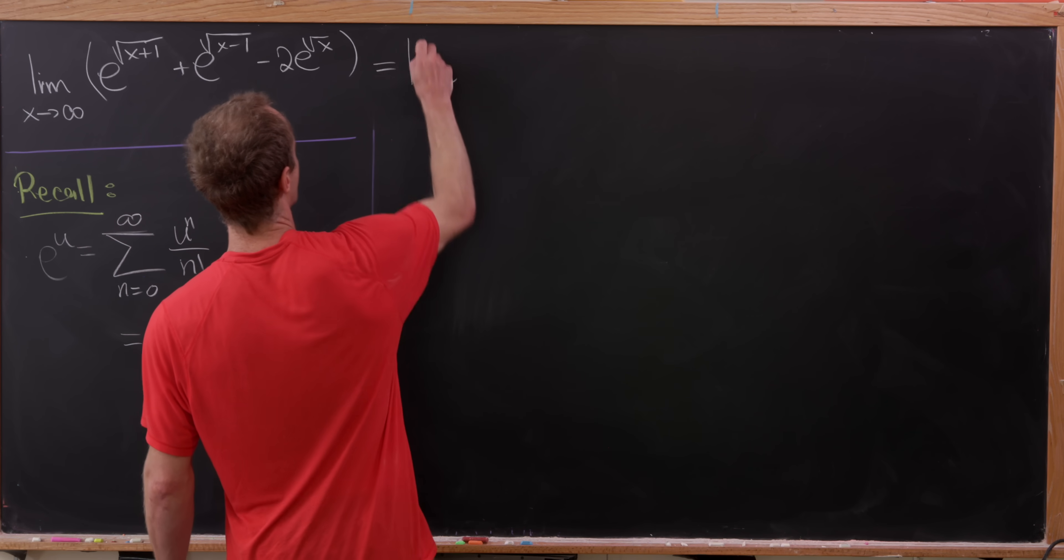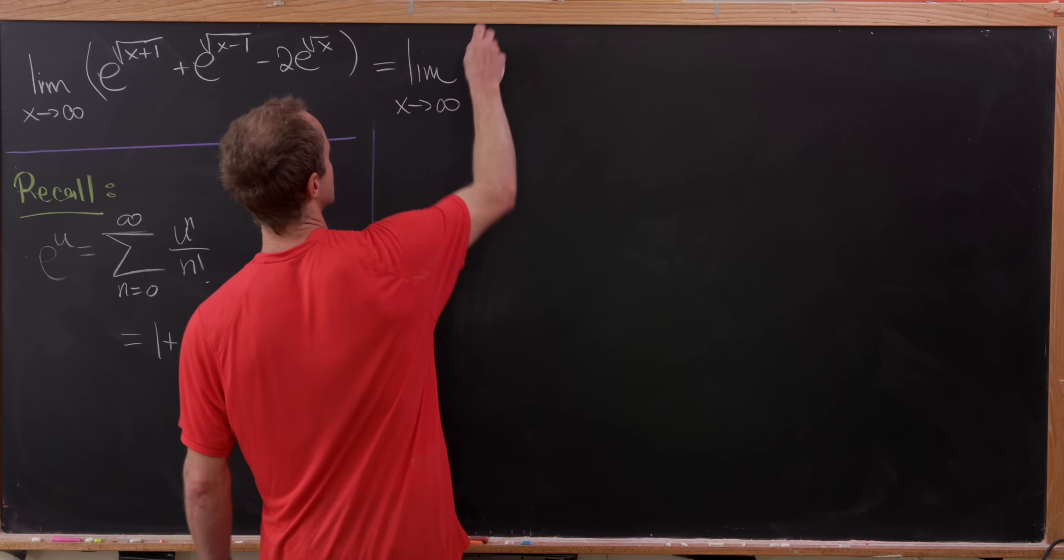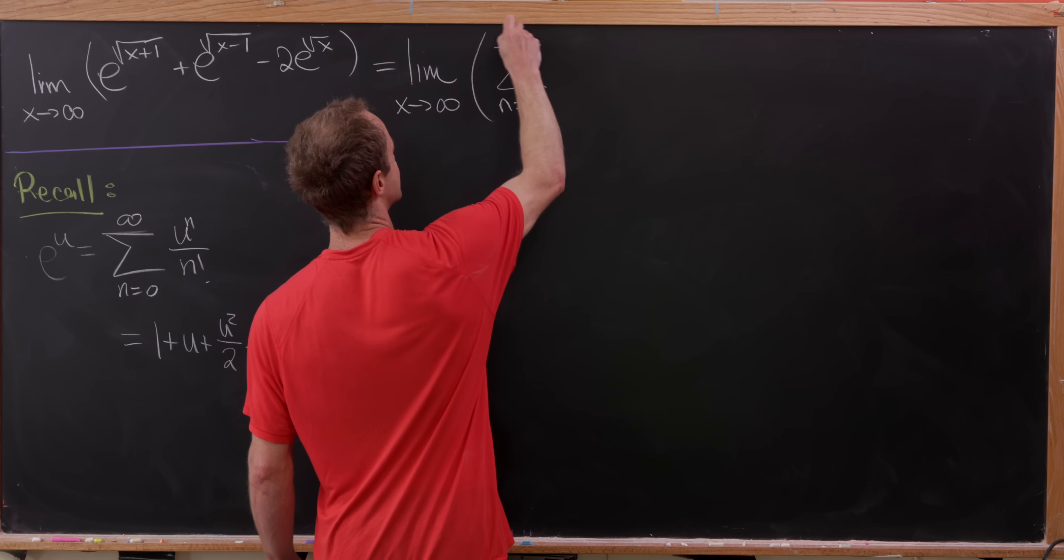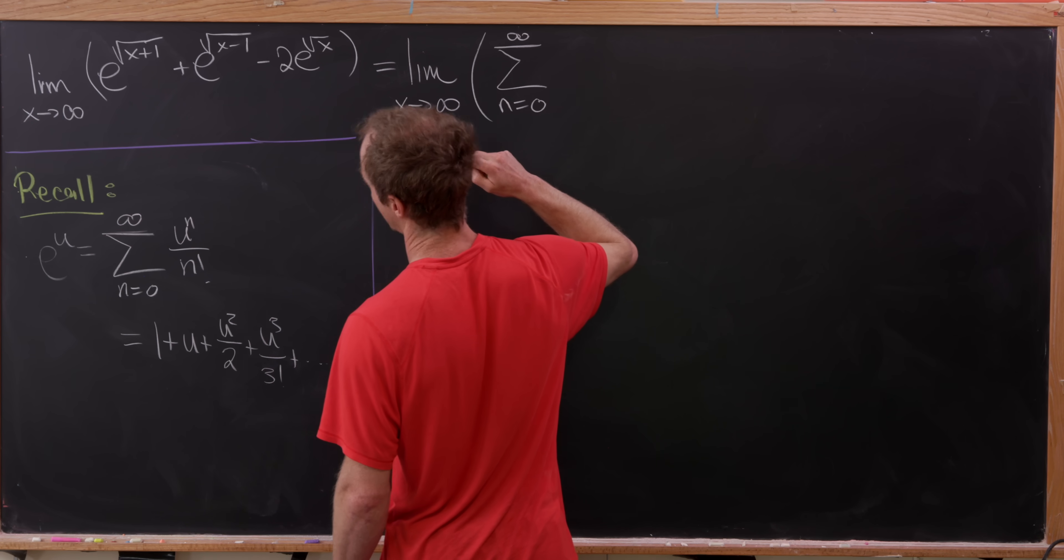Okay, so we're going to start by rewriting all of these using that. So here we have this sum as n goes from 0 to infinity. And then after that, we'll have what?